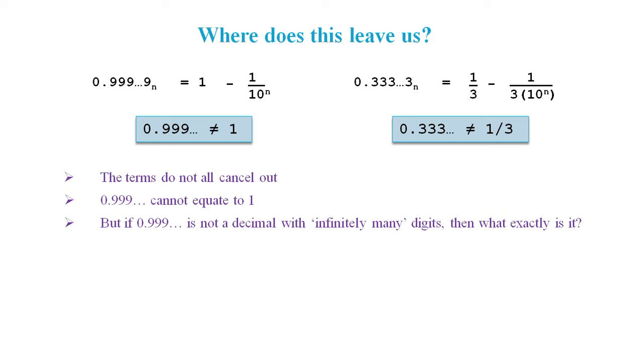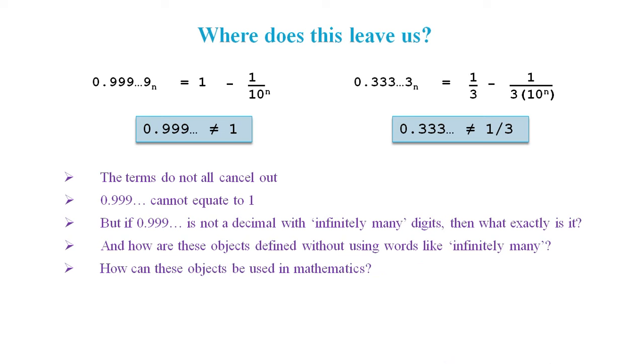But if 0.9 recurring is not a decimal with infinitely many digits, then what exactly is it? And how are these objects defined without using words like infinitely many? And how can these objects be used in mathematics?